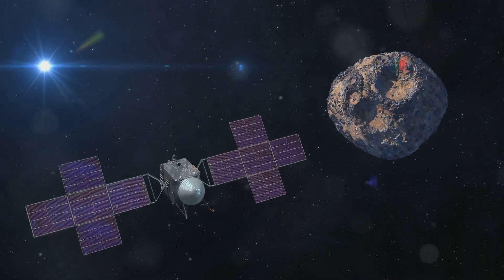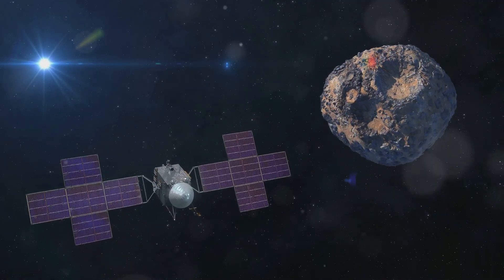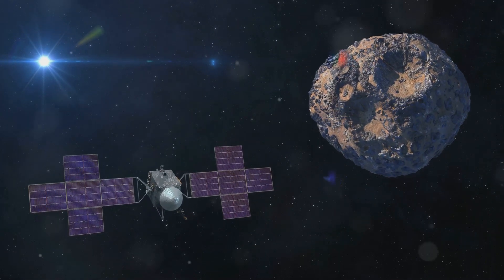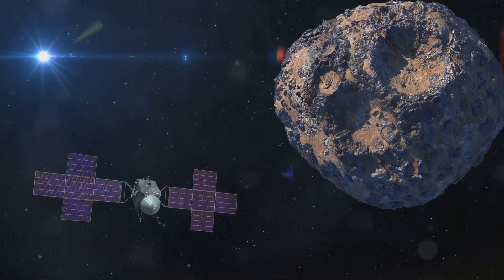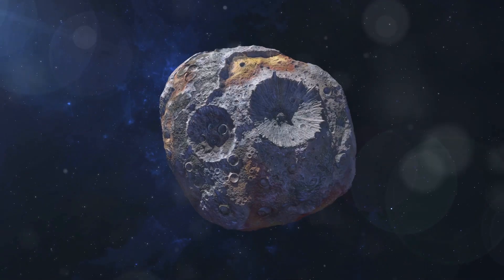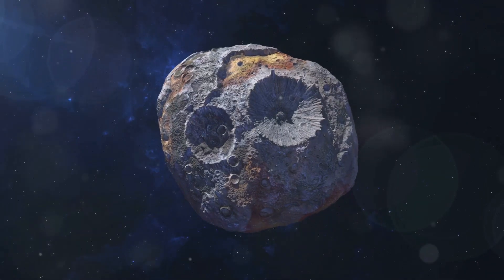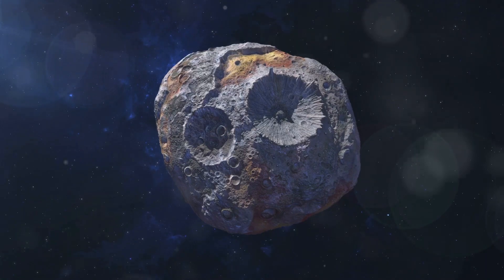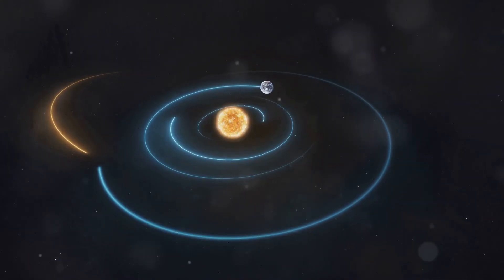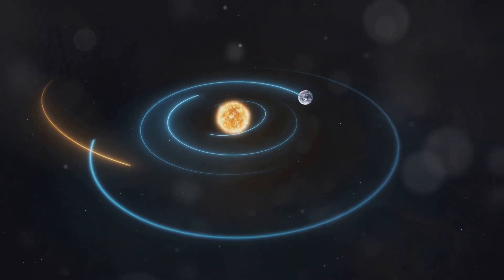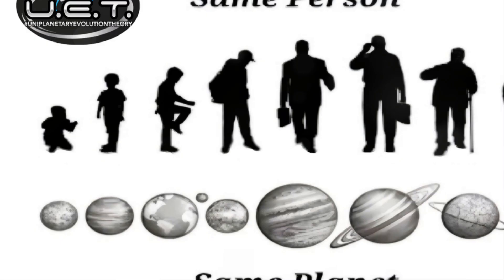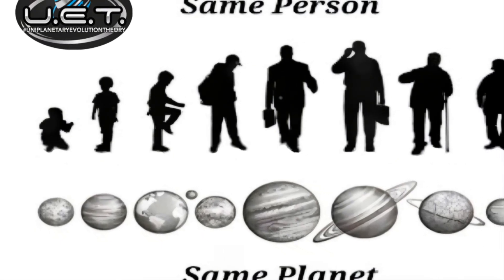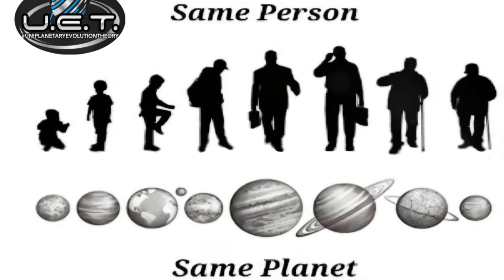That's right, a core without its mantle or crust, much like an exposed heart without its protective body. Now imagine if this massive metallic heart was once part of something much larger, perhaps a planet much like our own Earth. Enter the uni-planetary evolution theory, a captivating idea suggesting that all the planets in our solar system are actually different stages of Earth's own evolution, visible simultaneously.